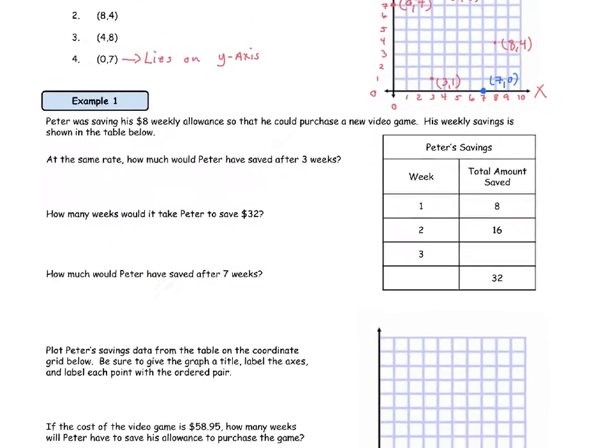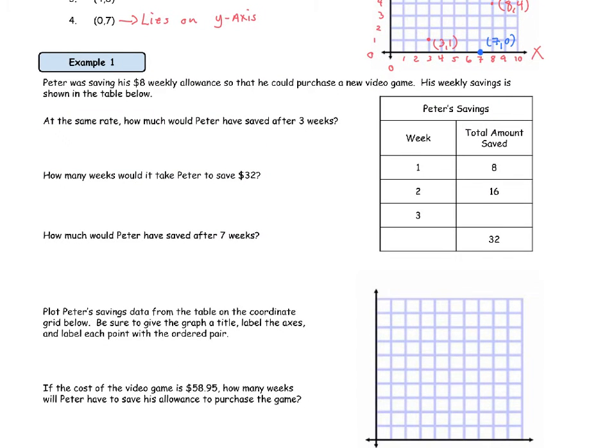Let's go ahead and get started on example number one. Peter was saving his $8 weekly allowance so that he could purchase a new video game. His weekly savings is shown in the table below. So it looks like we have a ratio table. It's a vertical ratio table. After one week, he has saved $8. After two weeks, he has saved $16. That pattern is going to continue all the way through. You can either use repeated addition or you can use multiplication.